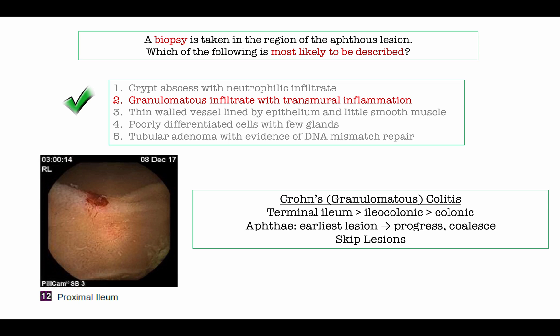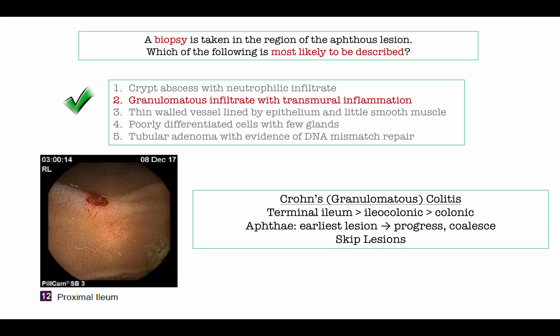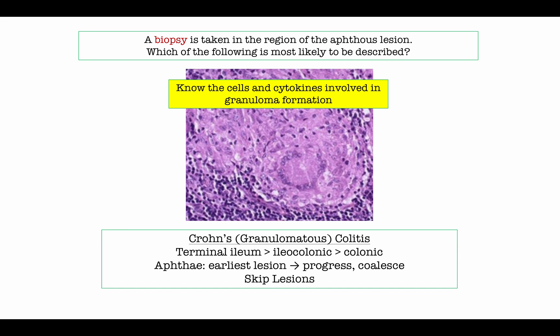In terms of commonly quoted take-homes: the terminal ileum is most commonly involved, followed by ileocolonic disease. Aphthous lesions are noted in the proximal ileum. Unlike ulcerative colitis, granulomatous colitis is associated with skip lesions — exactly what we are seeing here: two isolated inflammatory lesions. Ulcerative colitis is characterized by continuous involvement. So we have established a diagnosis of granulomatous colitis.